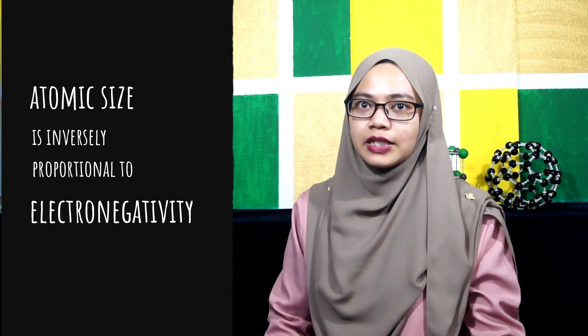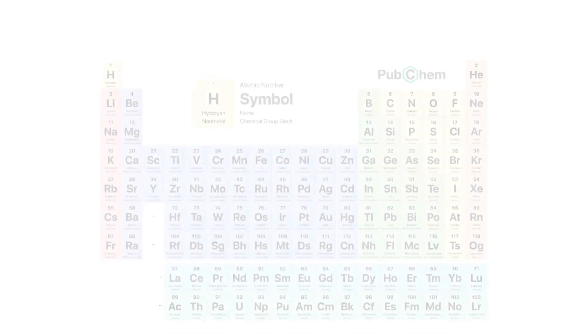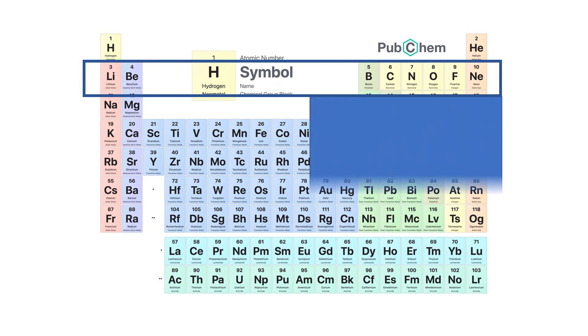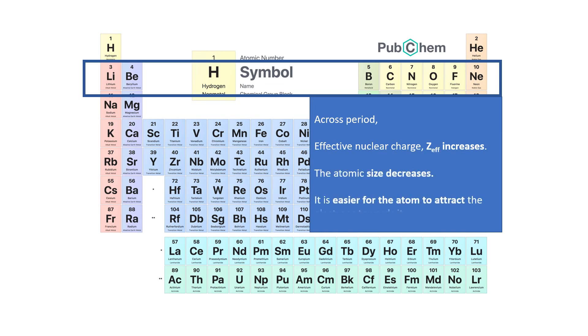Now let's have a look at how electronegativity varies in the periodic table. You already learned about the trend of atomic size. Atomic size is inversely proportional to electronegativity. As we go across a period from left to right, the effective nuclear charge increases. As a result, the atomic size decreases. Therefore, the atom has a greater ability to attract the bonding electrons.